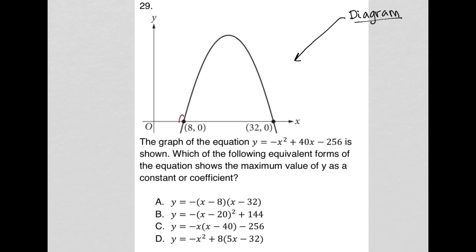It provides us with the x-intercepts here at 8, 0 and 32, 0, which means we could figure out the vertex here, at least the x value of the vertex, because it has to be halfway between these two x-intercepts, because parabolas are symmetrical.